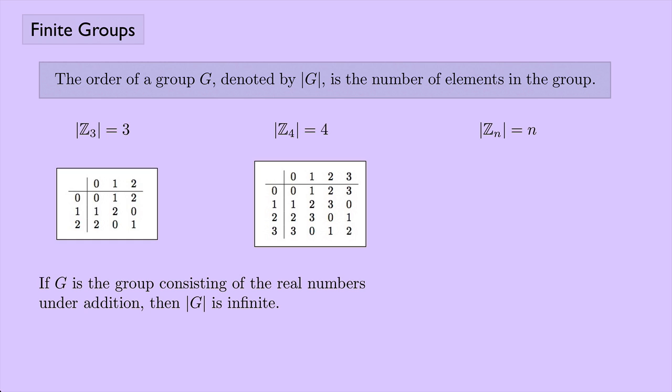These Zₙ groups are all finite groups. If G is the group consisting of the real numbers under addition, then the order of that group is infinite — there are an infinite number of elements in the set of real numbers. If the order of a group is finite, then we refer to that group simply as a finite group.